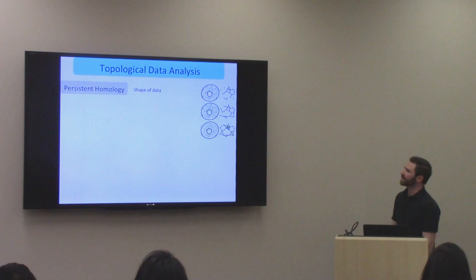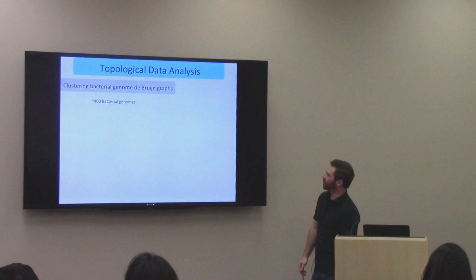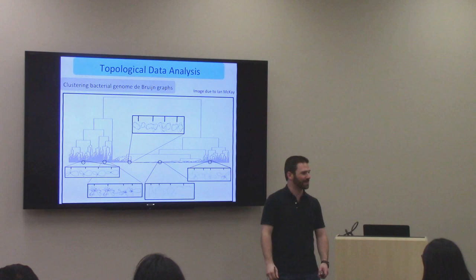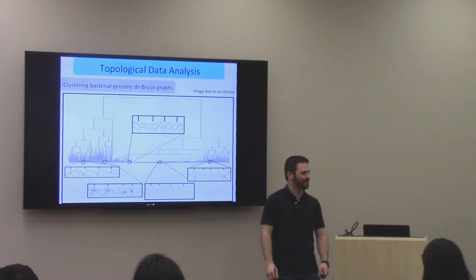So I don't have time to tell you about persistent homology, which is really cool topological data analysis stuff, which lets you get super pretty pictures that look like this, which allows you to cluster De Bruijn graphs for different bacterial organisms, which actually sort of corresponds roughly with the taxonomy, which is cool stuff. So if you want to ask me about that later, feel free. Works in progress, ecological networks, regulatory networks, yada yada. Thank you.